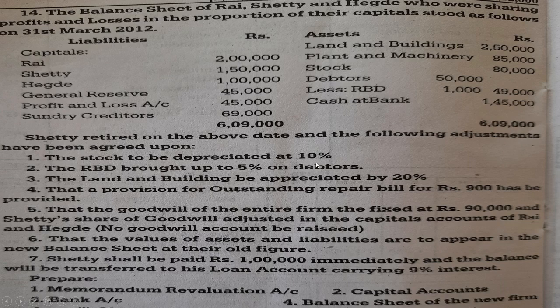The stock to be depreciated by 10%. The reserve for bad debts is to be 5% on debtors — debtors increased by 5%, already 1,000 but 5% increase. The land and building will be appreciated by 20%. A provision for outstanding repairs of Rs. 900 has been provided. The goodwill of the entire firm is fixed at Rs. 90,000.